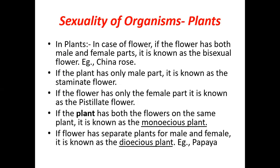Regarding the sexuality of organisms: in flowers, if both male and female parts are present, it is called a bisexual flower — for example, China rose. If a plant has only male parts, the flower is called a staminate flower. If it has only female parts, it is called a pistillate flower.